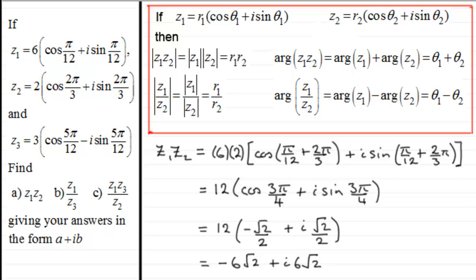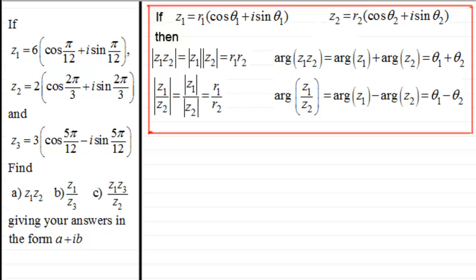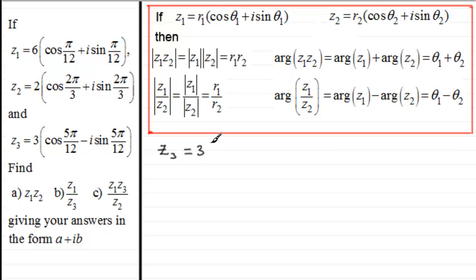For part b we need z1 divided by z3. I picked this one because z3 has a minus sign in front of the i·sine term, whereas the division result I gave you uses a plus. So we need to modify z3 first.